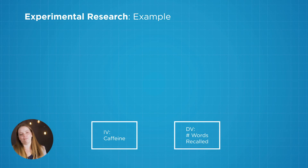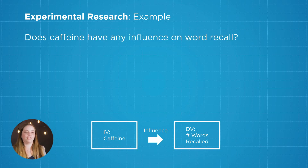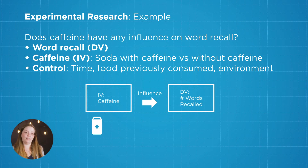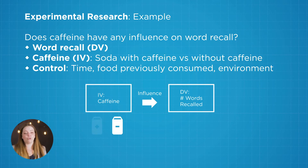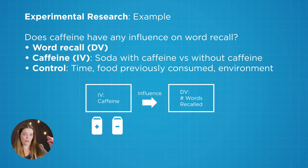Let's take one more example that's a little bit more psychology related. If we have an independent variable of caffeine and our dependent variable is the number of words recalled, we're really asking how does caffeine influence our memory? In this experiment, I would give some participants a Coca-Cola that has caffeine in it, and others a 7-Up that doesn't have any caffeine. The Coca-Cola condition is known as our experimental group, because this is where they're actually getting a dose of the thing we think is affecting memory. The control group is the 7-Up group where they're not getting any caffeine — this is our control baseline.